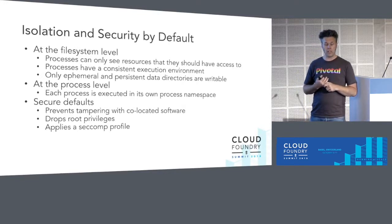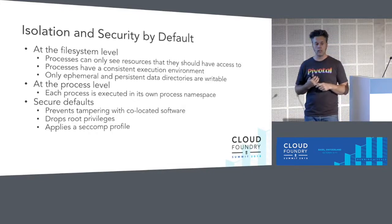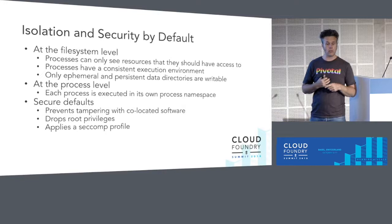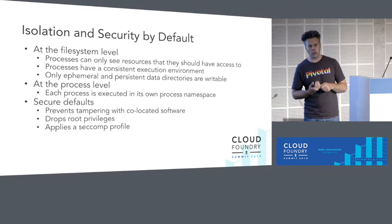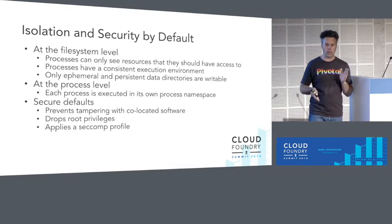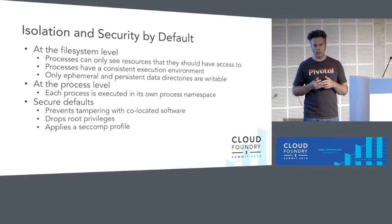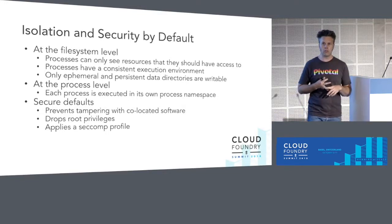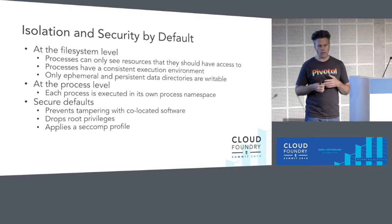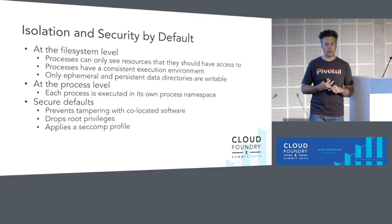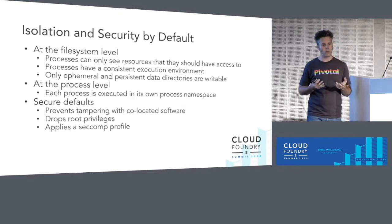BPM provides isolation and security by default. At the file system level, processes can only see the resources they should have access to — job A can't read the configuration file for job B even though they're on the same virtual machine. This provides credential isolation to some degree. Processes have a consistent execution environment with a very scoped view of the stemcell, consistent whether they're co-located with one or 100 jobs. You can opt in to write to ephemeral or persistent data directories, but otherwise the rest of the stemcell is off limits for writing.